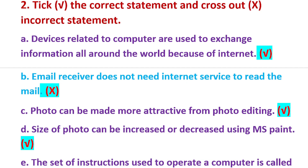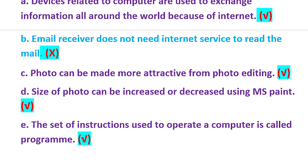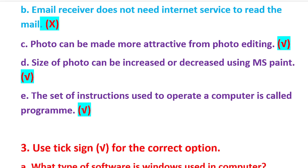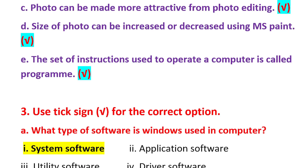C) A photo can be made more attractive by editing — that is correct. D) The size of a photo can be increased or decreased by MS Paint — that is correct. E) The set of instructions used to operate a computer is called a program — that is correct.